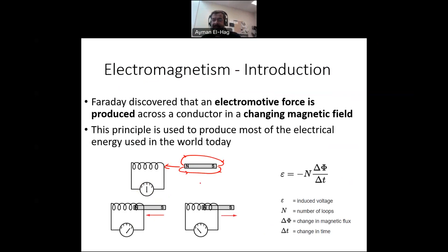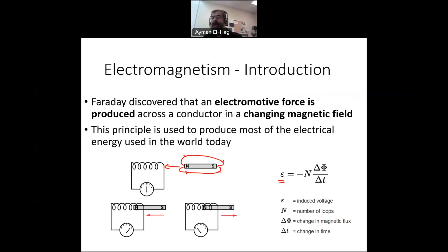This is what Faraday discovered, and it is considered one of the most fundamental and important laws underlying most electrical energy devices. Mathematically, the induced voltage equals minus N times delta-phi over delta-t, where N is the number of turns and delta-phi over delta-t is the rate of change of flux. The faster you move the magnet, the more voltage you induce; the more turns you have and the higher the flux strength, the more voltage is induced. This fundamental concept of magnetism and electromagnetism provides the background needed to understand energy-converting devices like transformers, motors, and generators.